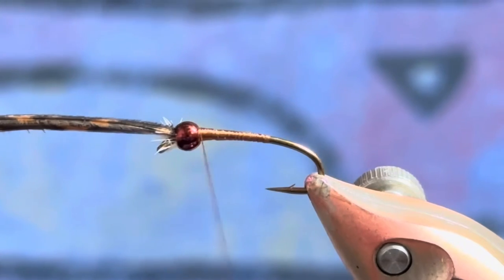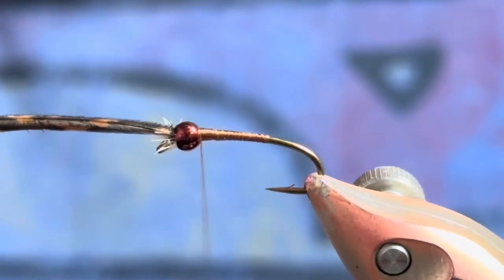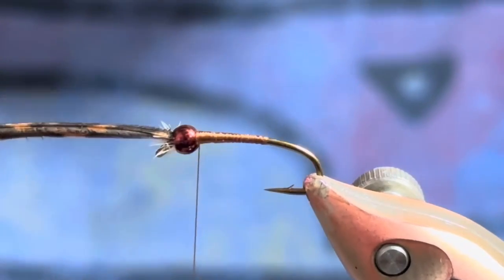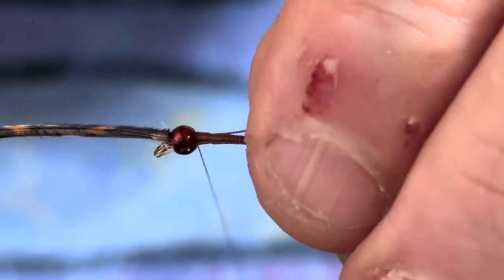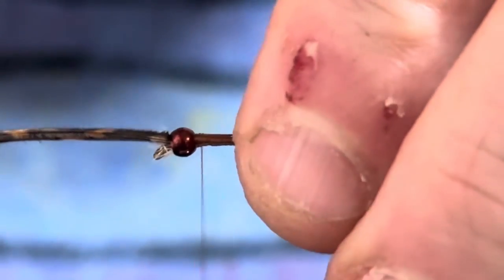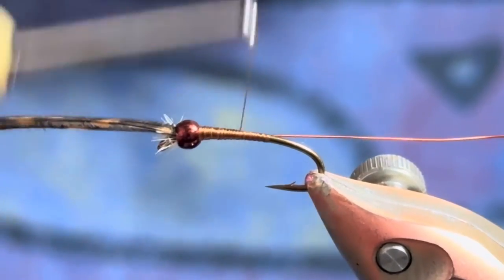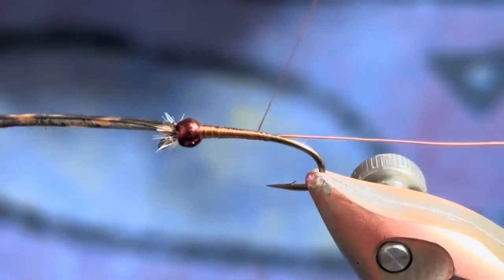Next I'm going to grab some copper brown wire. We're doing kind of a dirty olive version of this. I did a brown olive in the pattern I posted, but this one utilizes a little bit more material.